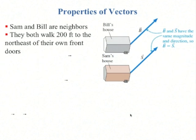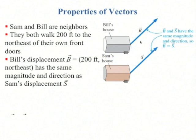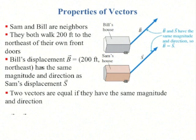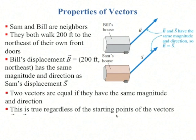Another example: if Sam and Bill are neighbors, and they both walk 200 feet to the northeast of their front door, then the displacement vector for both of them is 200 feet northeast. Two vectors are equal if they have the same magnitude and direction, regardless of the starting points of the vectors.